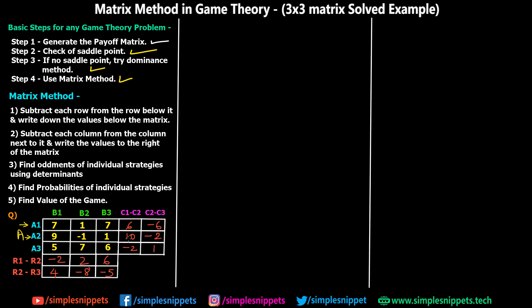Steps 1 and 2 are now complete. Next we find the oddments of individual strategies using determinants. Because this is a 3×3 matrix, we cannot directly find oddments like in the odds method which was for a 2×2 matrix. Here we find oddments for individual strategies A1, A2, A3, B1, B2, and B3 by taking determinants.